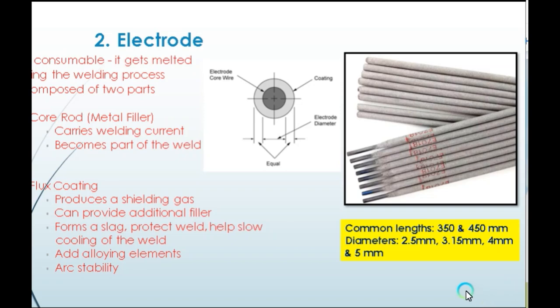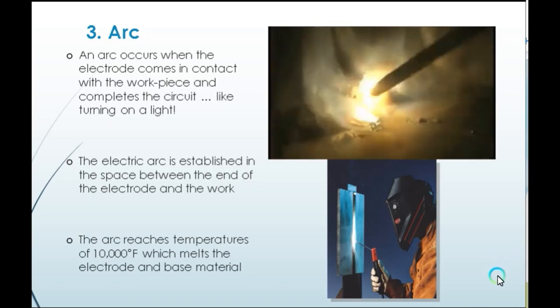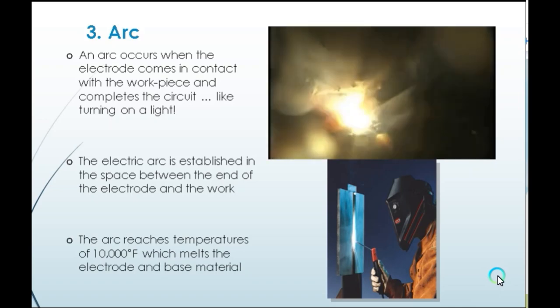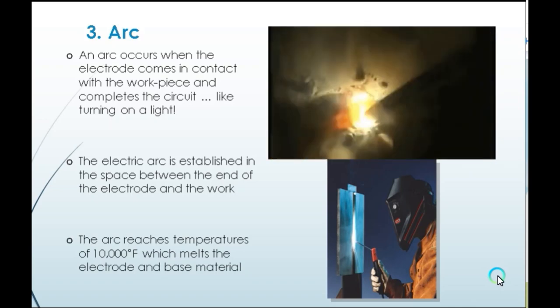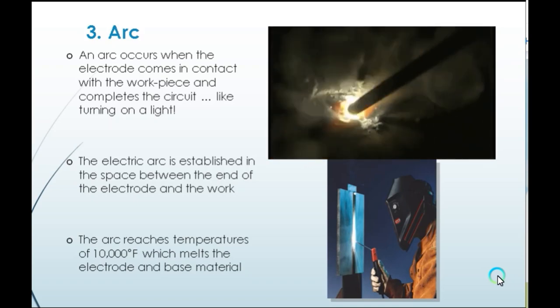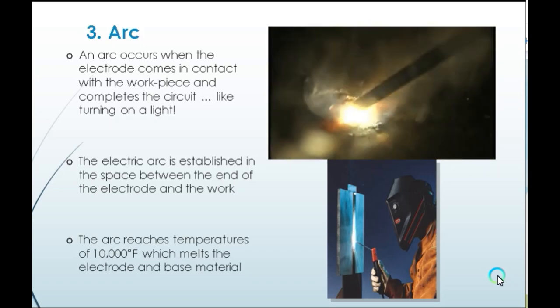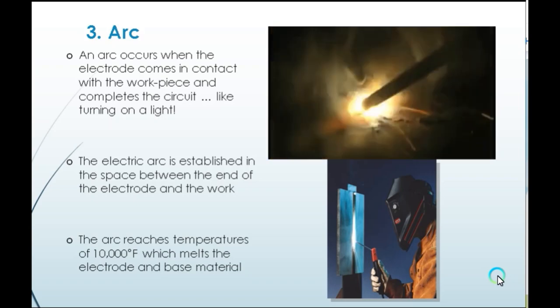Common lengths available for welding electrodes are 350mm and 450mm, and common diameters are 2.5mm, 3.15mm, 4mm, and 5mm. Next is the welding arc. An arc occurs when the electrode comes in contact with the workpiece and completes the circuit like turning on a light. The electric arc is established in the space between the end of the electrode and the work, reaching temperatures of 10,000 degrees Fahrenheit, which melts the electrode and base material.